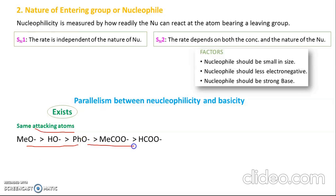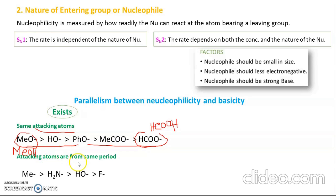To determine nucleophilicity order, consider the corresponding acid. For example, HCOO⁻ corresponds to HCOOH (formic acid) and CH₃O⁻ corresponds to methanol. Since formic acid is very acidic, HCOO⁻ is a very stable conjugate base with low attacking tendency — low nucleophilicity and low basicity. CH₃O⁻ is less stable, so its attacking tendency is high — high nucleophilicity and high basicity. Parallelism also exists when the attacking atoms are all from the same period, such as C⁻, N⁻, O, and F, all from the second period.